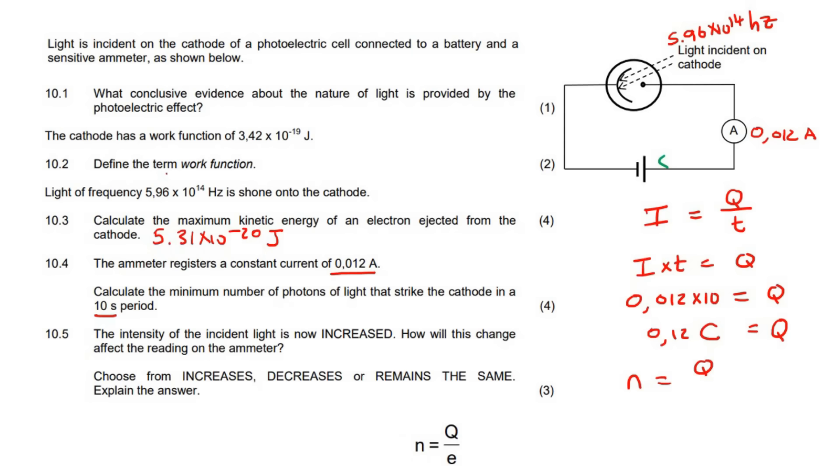We could say N equals Q over E, so the number of electrons will be 0.12 divided by the charge of an electron, which is given on your formula sheet: 1.6 times 10 to the negative 19. That'll give us 7.5 times 10 to the 17 electrons.